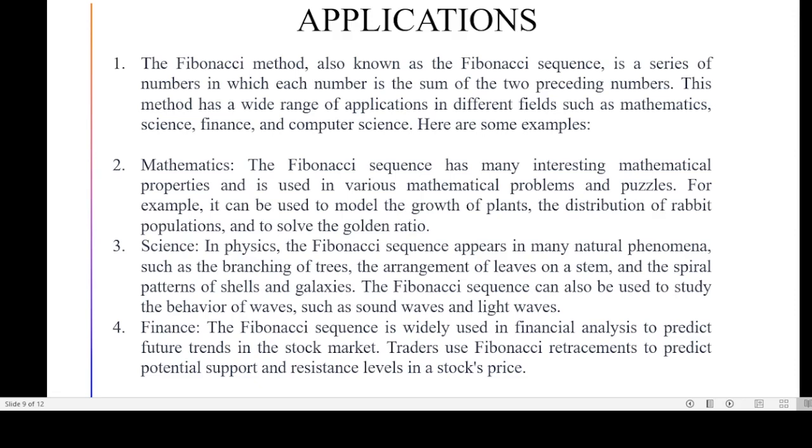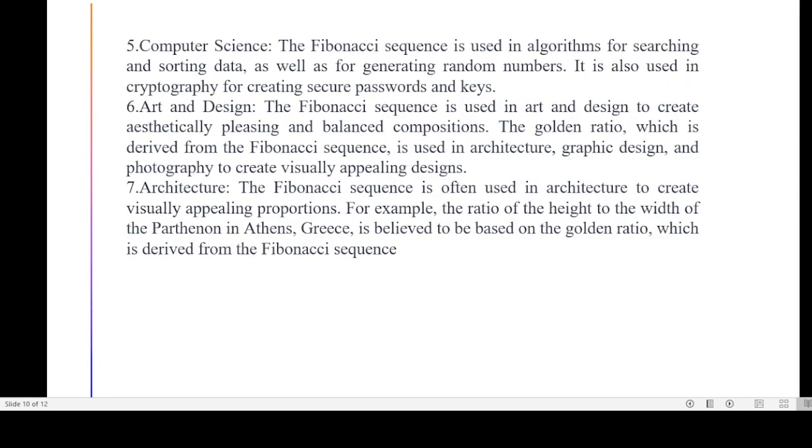It can be used in machine learning to optimize the hyperparameters of a model by finding the combination of hyperparameters that minimize the error of model on a validation set. It can be used in mathematics to model the growth of plants, distribution of population and solving the golden ratio. In physics, Fibonacci sequence appears in many natural phenomena such as branching of trees, spiral patterns of shells and galaxies. It can be used to study behavior of waves such as sound waves and light waves. It is used in architecture to create visually appealing proportions for representing the ratio of height to width. The Parthenon in Athens, Greece is believed to be based on the golden ratio which is derived from Fibonacci sequence.